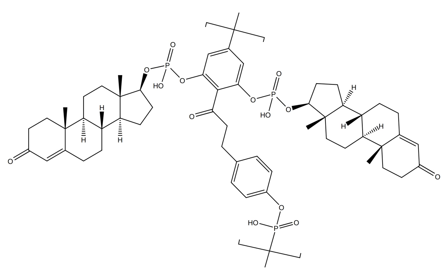PEP is a linear polymer of on average 13 repeat units of estradiol phosphate. Each individual estradiol unit in the molecule is connected by its C3 and C17β-hydroxyl groups to phosphoric acid linkers that are present between the estradiol moieties.